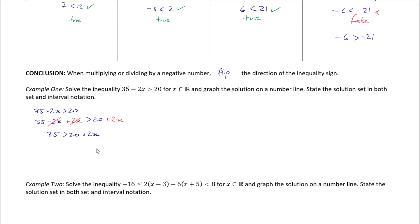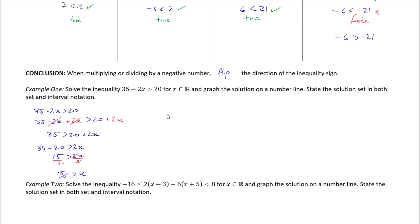Adding 2x to both sides cancels the −2x on the left, giving 35 > 20 + 2x. Then subtract 20 from both sides — that cancels the 20 on the right — yielding 15 > 2x. Divide both sides by 2, and we get 15/2 > x.